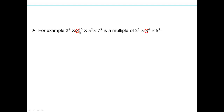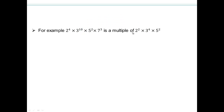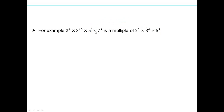Looking at 5: we need power 2 or more, and we have exactly 2 — good. This first number also has an extra factor of 7, which is fine. You can have extra factors. As long as all of these factors appear in the first number, then the first number is a multiple of the second number.